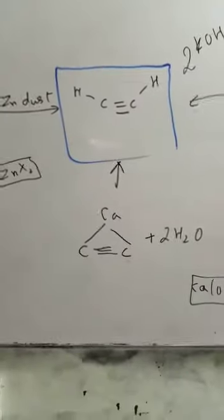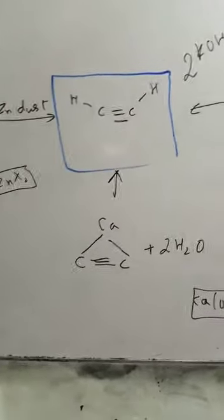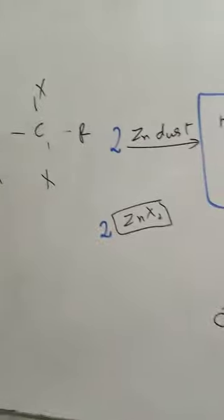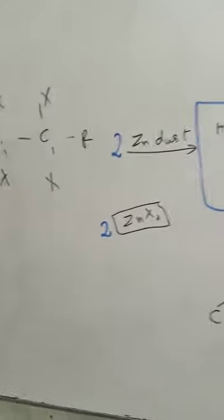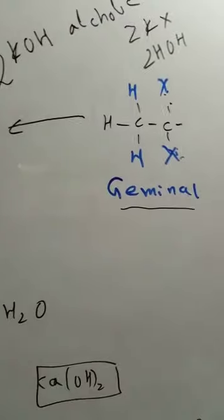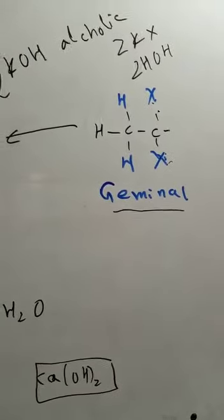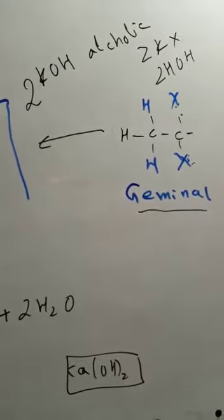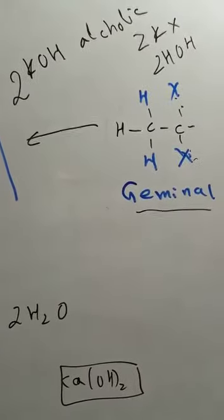So this method can be used to make alkyne. Which methods are used to make alkyne? One thing is zinc dust. That will make alkyne. And then dehydrohalogenation, geminal dihalide with help of alcoholic KOH. Remember, aqueous KOH is very different.